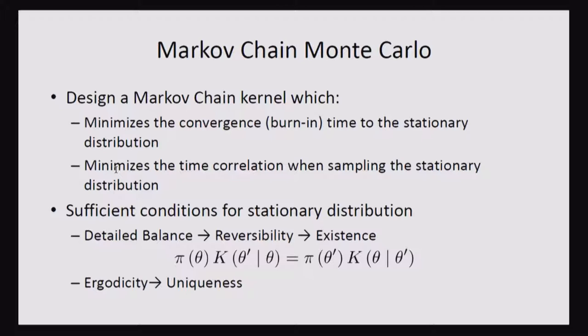Which ensures that we have reversibility in the Markov chain, which means that that posterior distribution is a stationary state of your Markov chain. And then we also need ergodicity to make sure it's the only stationary state.